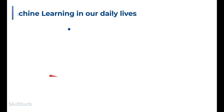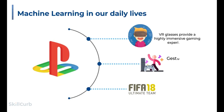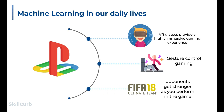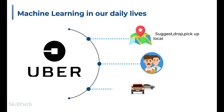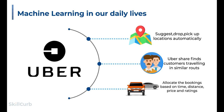The gaming industry has evolved a great deal thanks to machine learning and artificial intelligence. We now have the facility of virtually experiencing the gaming environment due to VR glasses, and physical activities at home are possible due to gesture game control provided by Nintendo. Uber has also made our lives easier through machine learning: features such as suggesting the shortest route, suggestions for drop and pickup points, finding customers travelling on similar routes, and predicting fares based on route and time of booking.